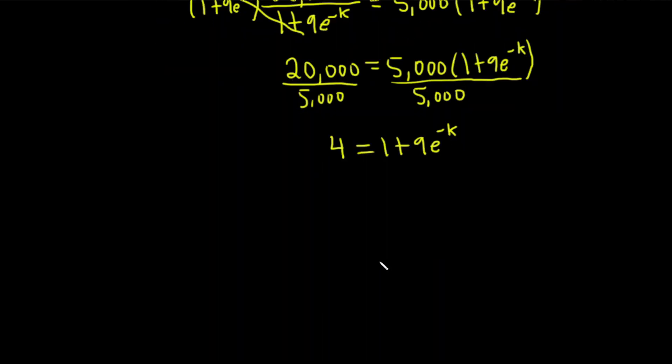We want to isolate e to the negative k. Subtracting 1, we get 3 equals 9e to the negative k. Then dividing by 9, that implies 1/3 equals e to the negative k.